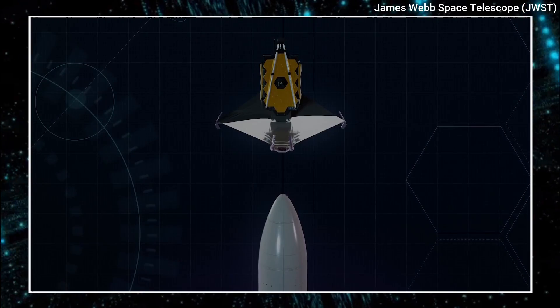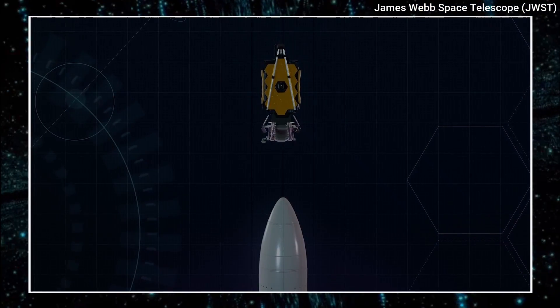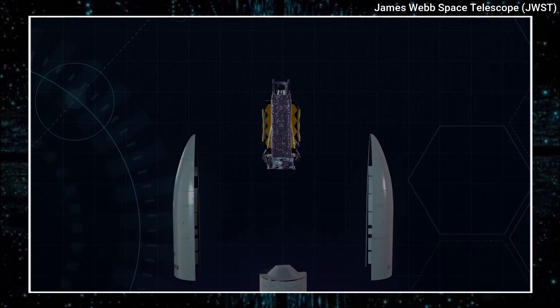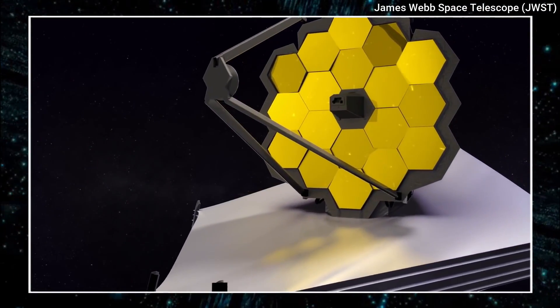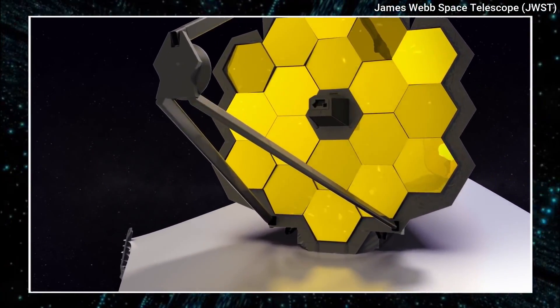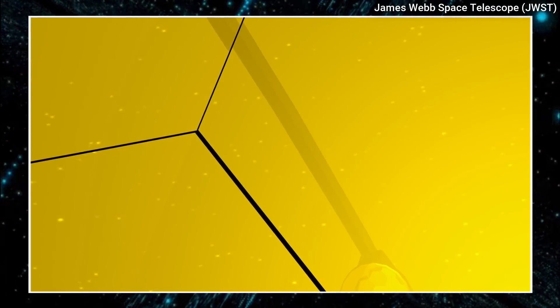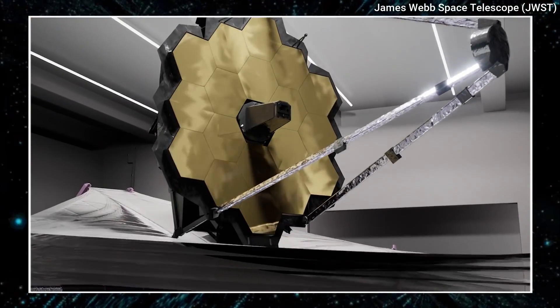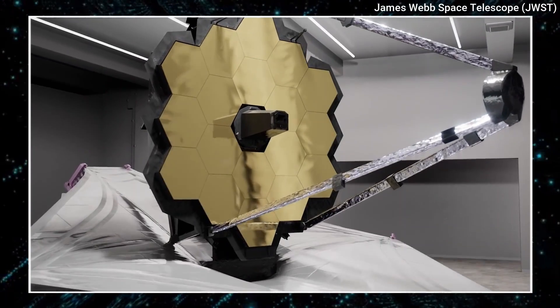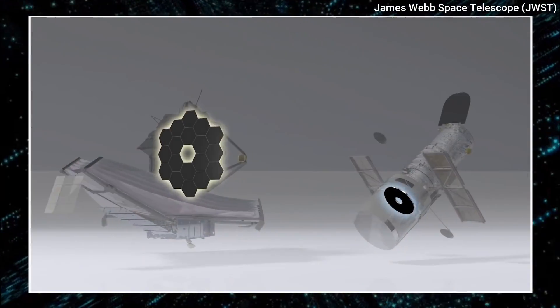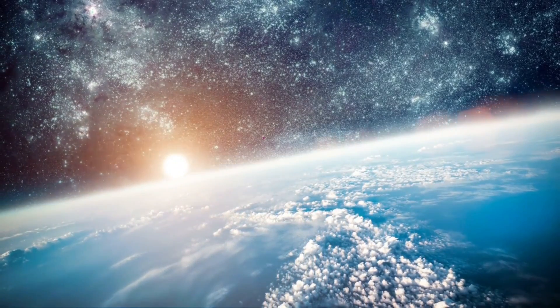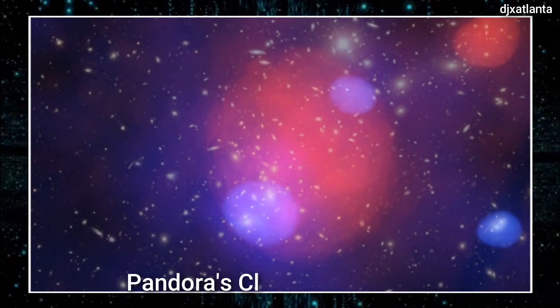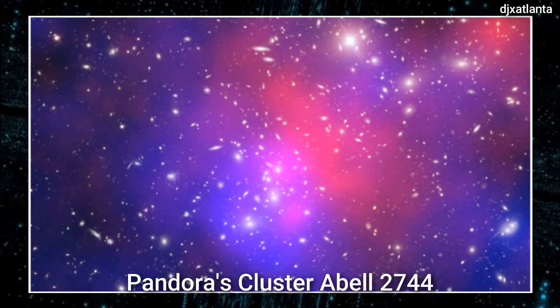James Webb's primary goal is to investigate the formation and evolution of galaxies, particularly in the early stages of cosmic history. Webb's infrared vision is used to peer through dust and gas that obscures visible light and captures images of distant galaxies billions of light years away. One such image is Webb's most recent deep field image, which shows never-before-seen details in a region of space known as Pandora's cluster ABL 2744.